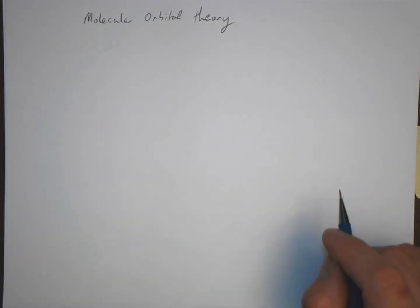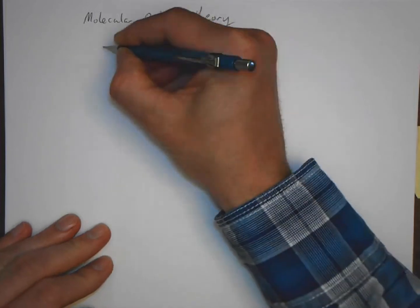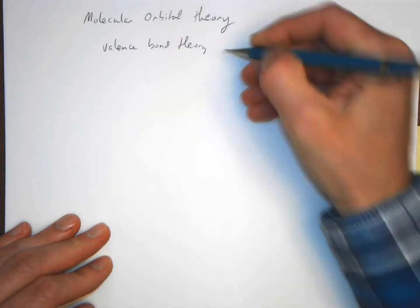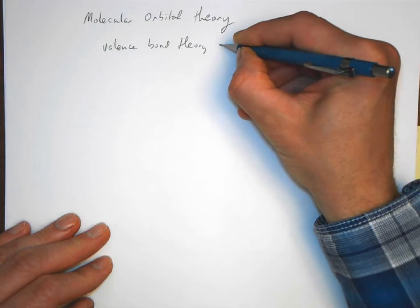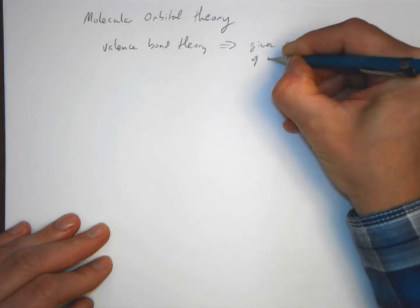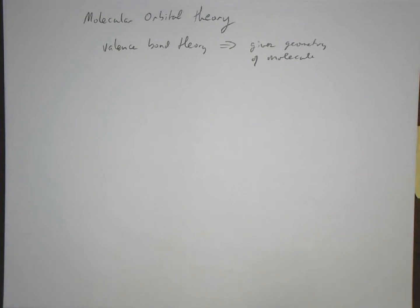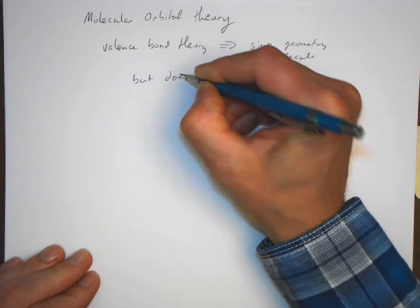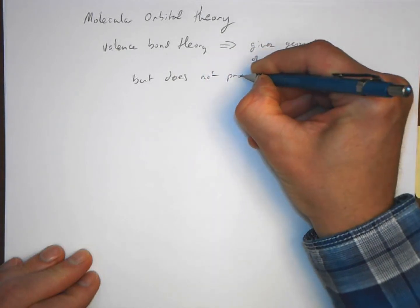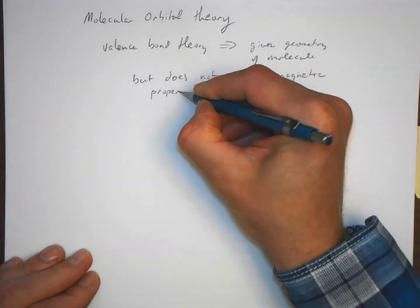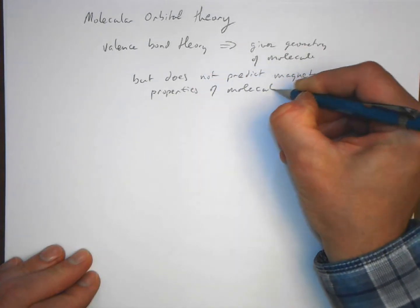The final lecture in this chapter deals with something called molecular orbital theory. Valence bond theory is great at giving us the geometry of a molecule — we can predict the shape of most any molecule using valence bond theory — but it does not always predict magnetic properties of molecules correctly.